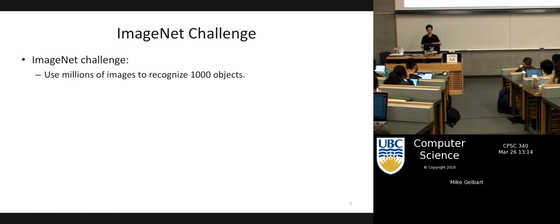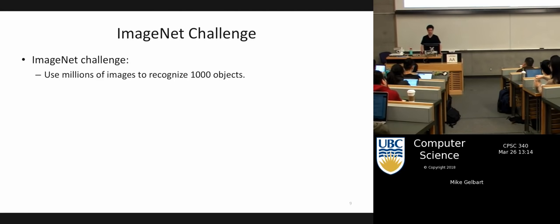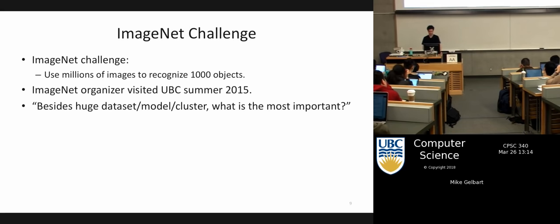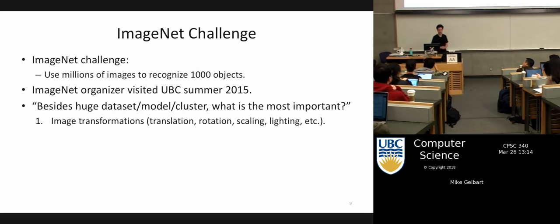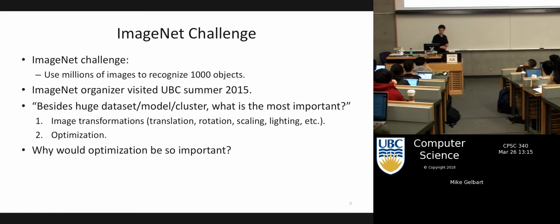The ImageNet Challenge is a computer vision competition that's been going on for several years in which deep learning tends to dominate. You're essentially shown pictures of things and try to recognize what's in the picture. Some lessons learned from what leads to good performance: image transformations — inventing new training data by doing stuff to the image that you know shouldn't change the class. And the other big thing is optimization, which is what we really need to talk about today. Optimization wasn't really making or breaking our methods earlier in the course, like logistic regression or PCA.